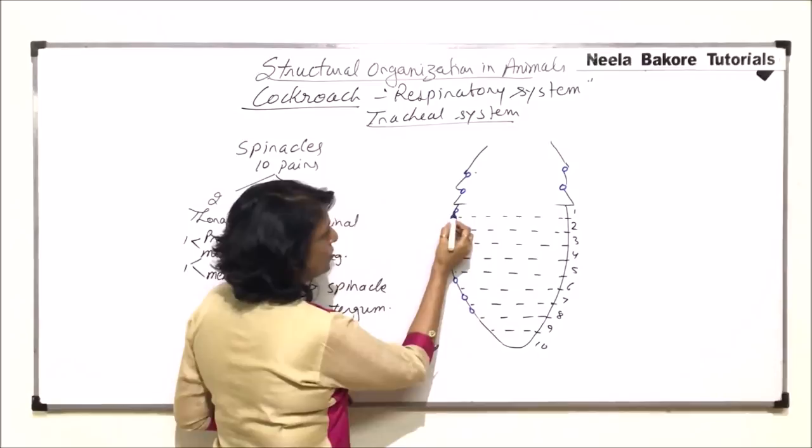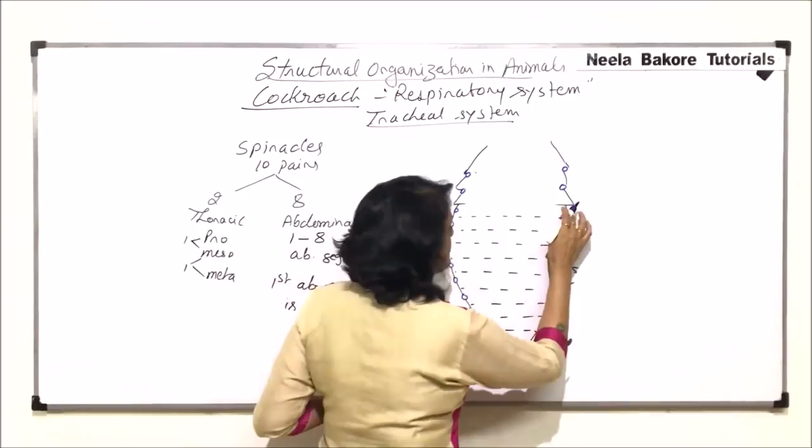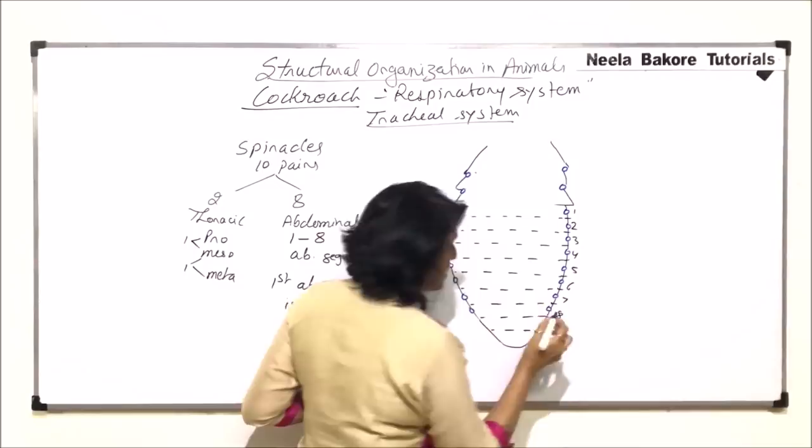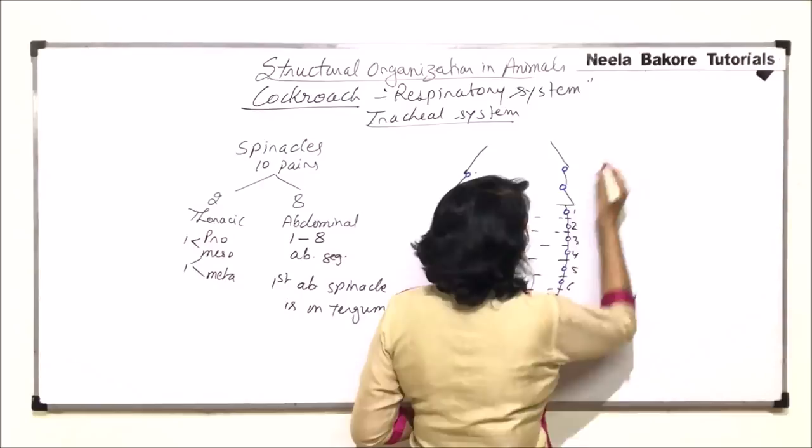There are 8 pairs of abdominal spiracles, from segments 1 through 8, and the same spiracles are present on both sides — so this is all paired. Each spiracle opens into a small sac-like structure which is called the atria.